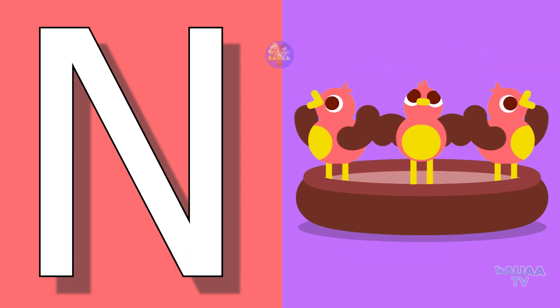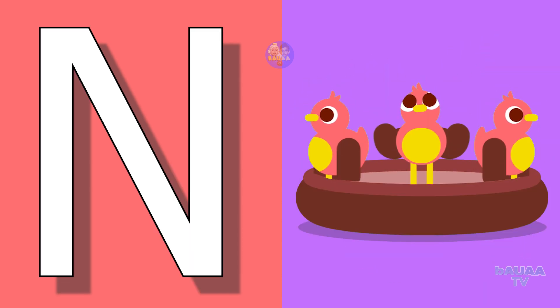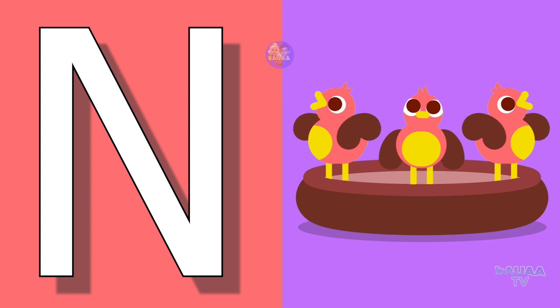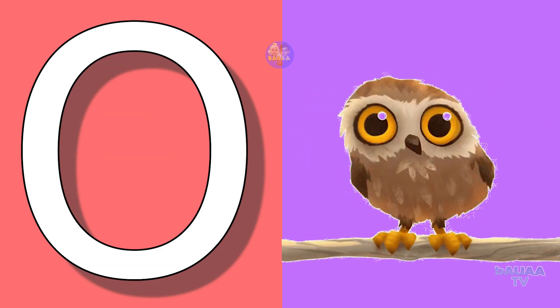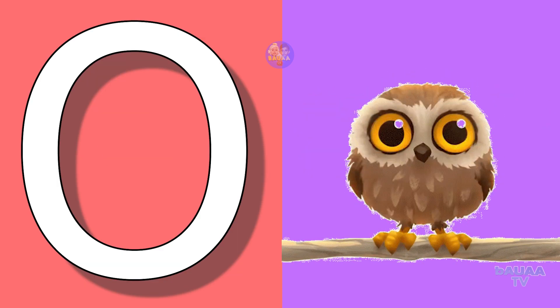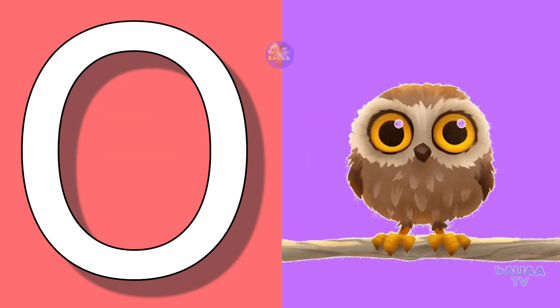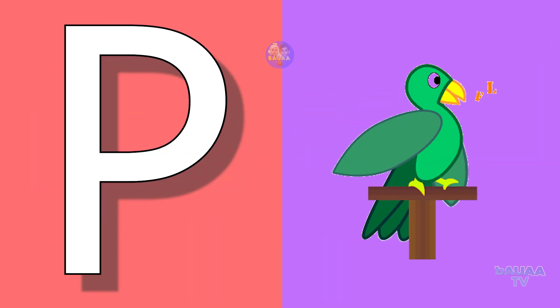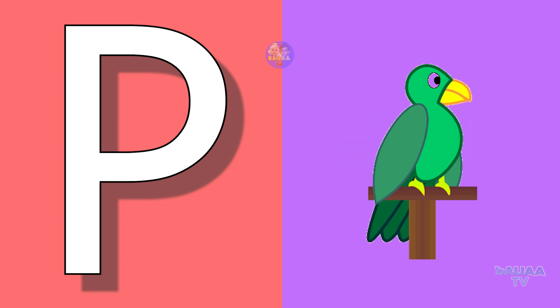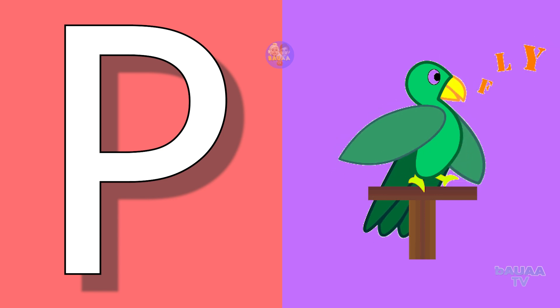N for nest, nest means ghosla. O for owl, owl means ullu. P for parrot, parrot means tota.